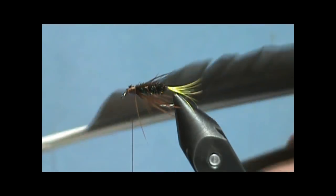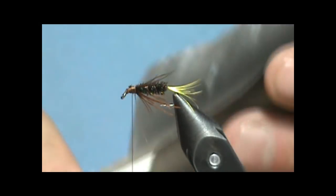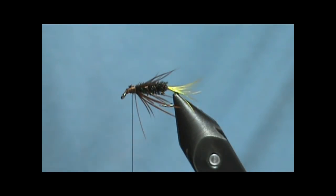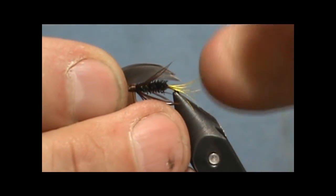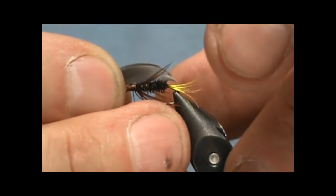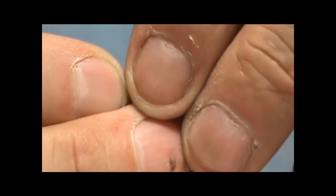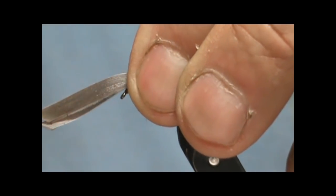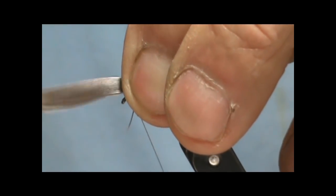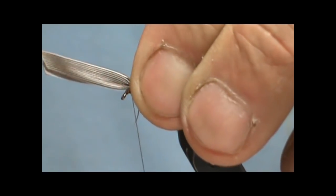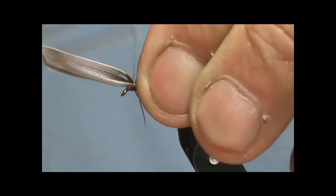Now I'm going to take my goose quills and I'm going to cut my wings. I'm going to size them. We want them just slightly longer than the body. I'm going to hold them in place. We're going to give it a soft loop, pull it straight down, and when those fronts come up like that you know they're on top.